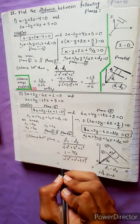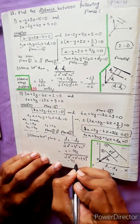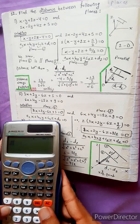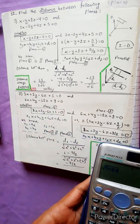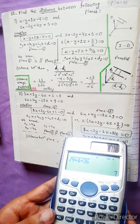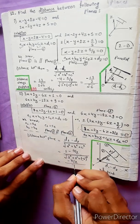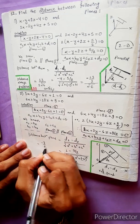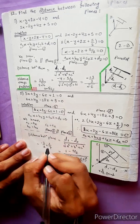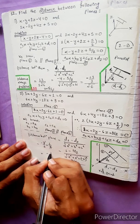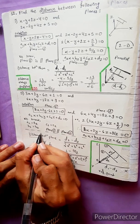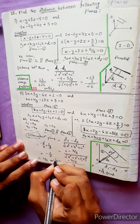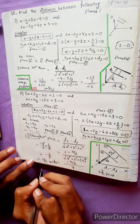Calculating: |d1 - d2| = 7/2. The denominator is √(3² + 2² + (-6)²) = √(9 + 4 + 36) = √49 = 7. So distance = (7/2) ÷ 7 = 1/2 units. The distance between the planes is 1/2 units.